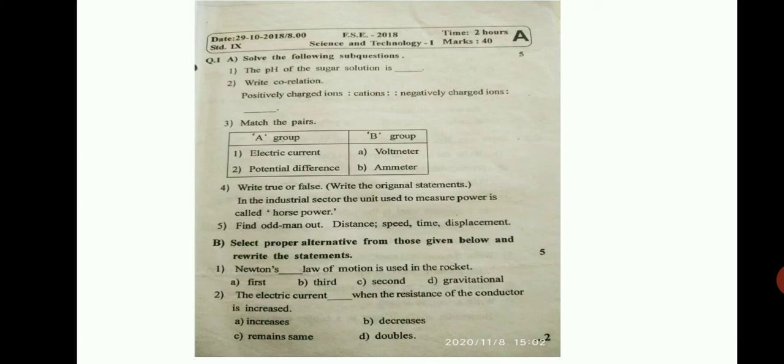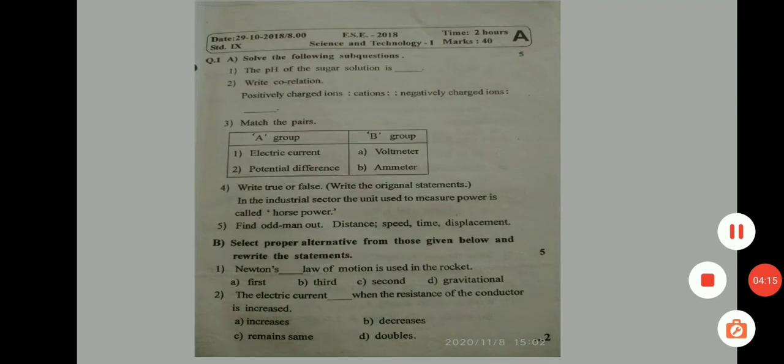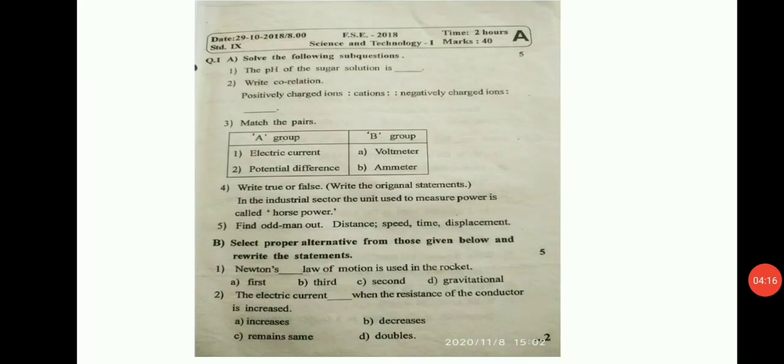Do practice all these types of questions where I hope everyone gets out of marks. Here match the pairs is given A group and B group, where A is given electric current and potential difference. The answers here are voltmeter and ammeter. You have to write down the answers.